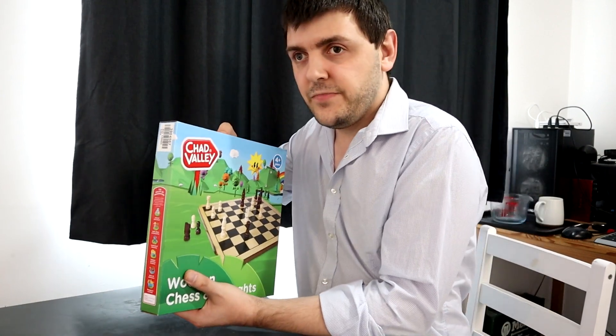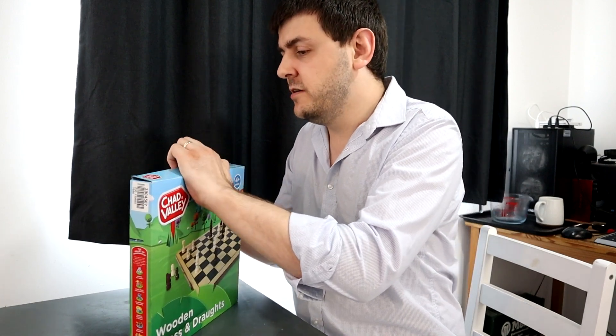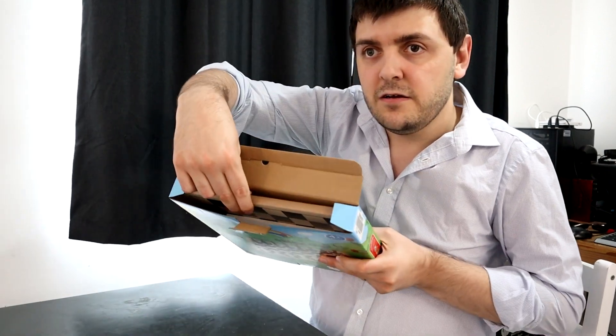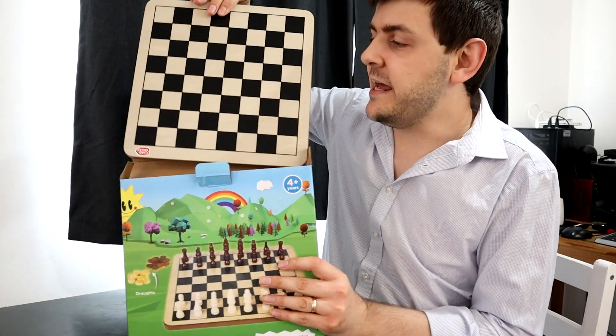Let's have a look. Inside here there should be pieces for chess and draughts, plus a wooden board. First out, I can see at the top here the wooden board, so let's get that out.